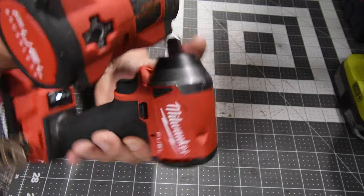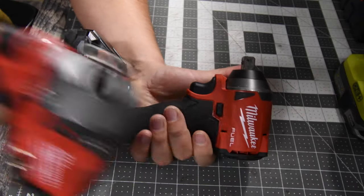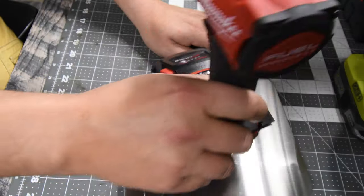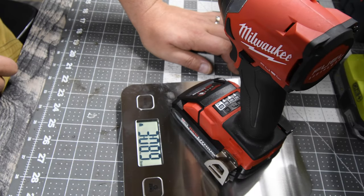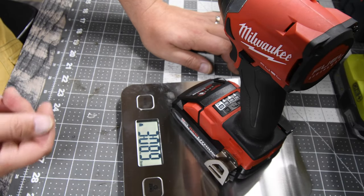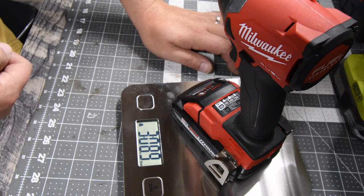As you can see, that anvil is actually for the Milwaukee impact driver. With a three amp hour high output battery, it is three pounds and zero eight point nine ounces.